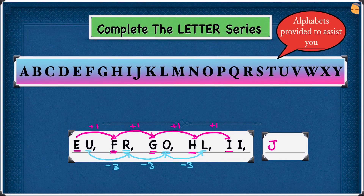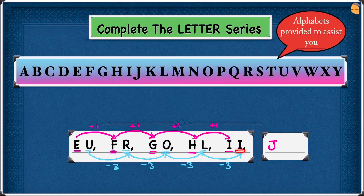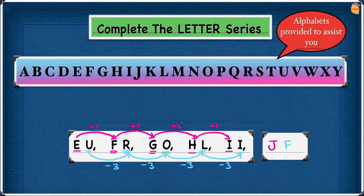And then L to I. Looking at the alphabet, L is here and I is here — 1, 2, 3 — minus 3. Write minus 3. So now we have to move three steps backwards from I to get the second part of the answer. I is here — 1, 2, 3 — minus 3 lands us at F. So the second part of our answer is F, and our answer is JF.